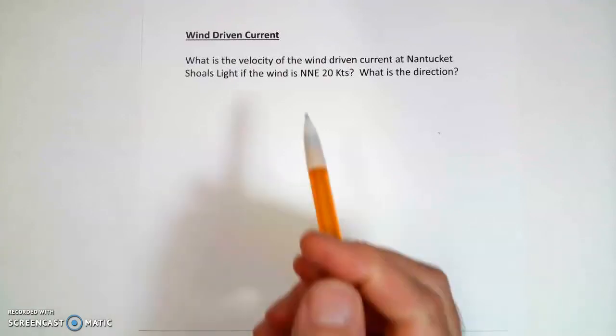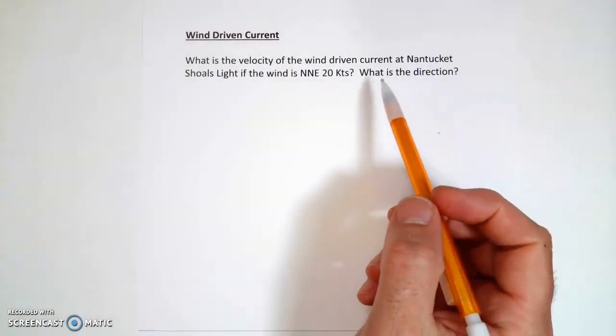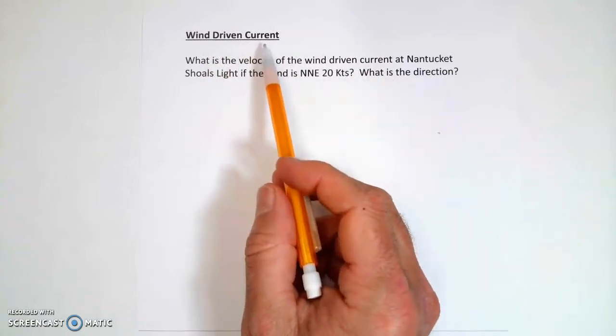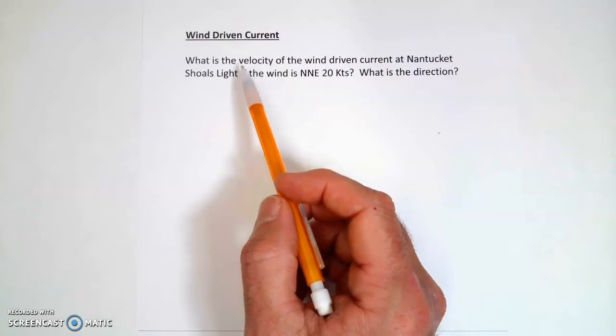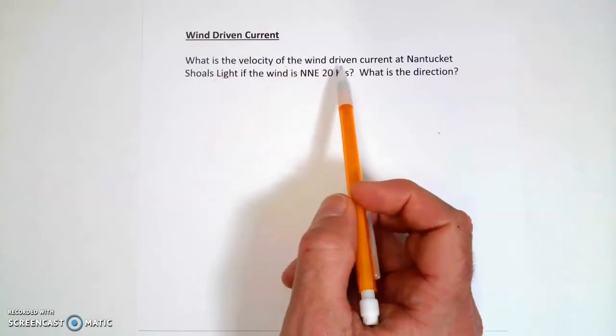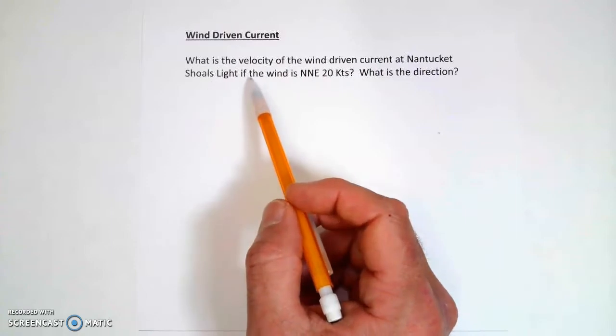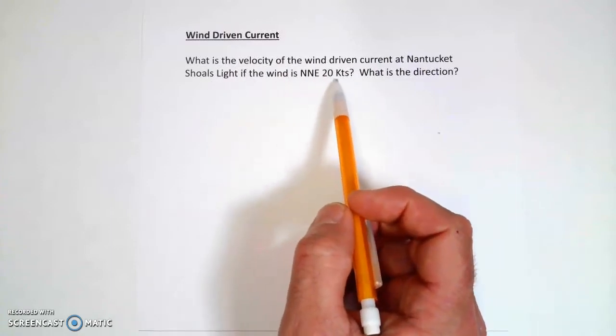Alright, so in this video, we're going to be doing this problem. I just made it up. This is a wind-driven current problem. We'll be using the wind-driven current tables in the tidal current book. What is the velocity of the wind-driven current at Nantucket Shoals Light if the wind is north-northeast at 20 knots?